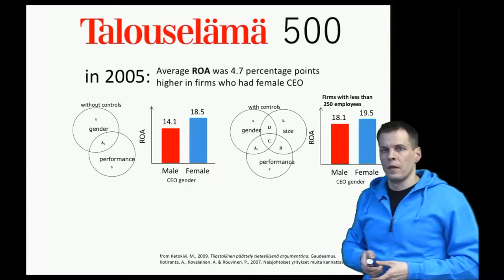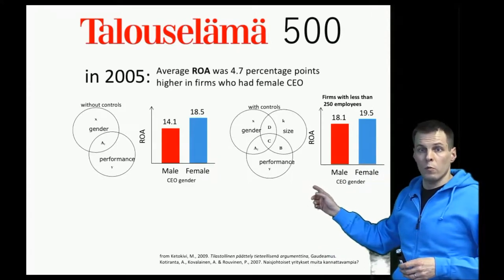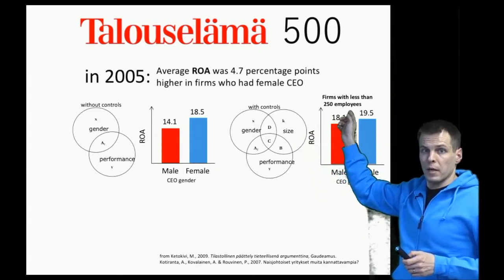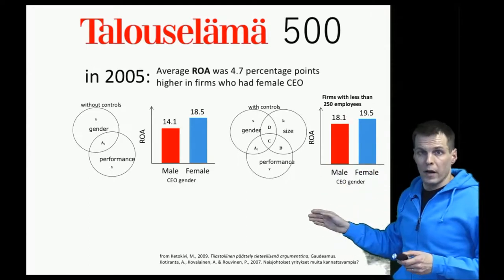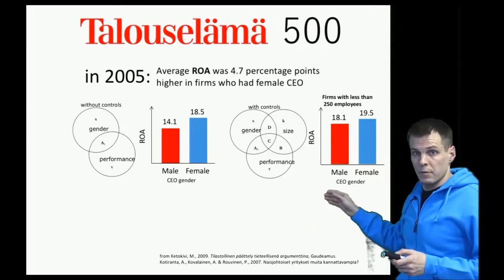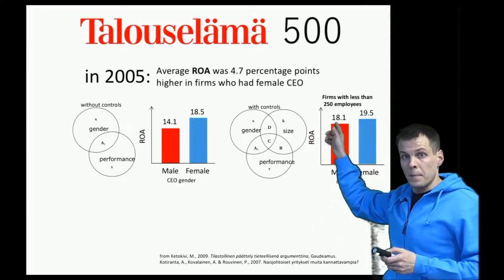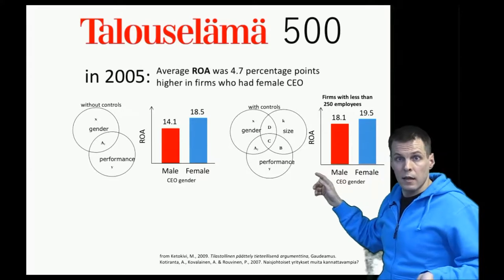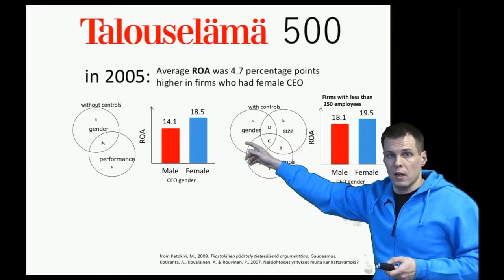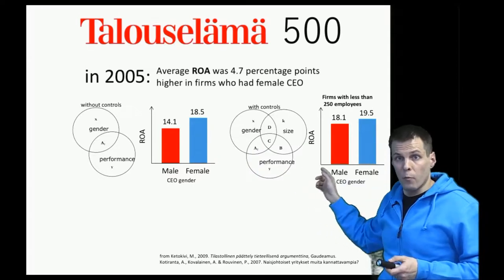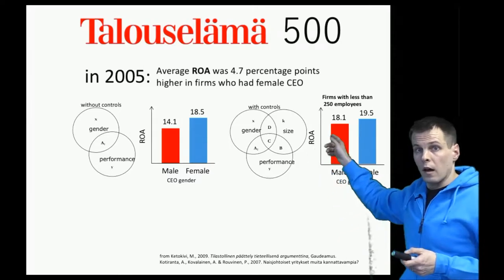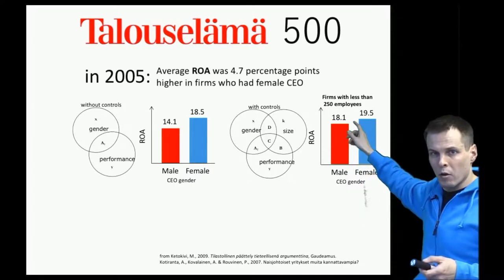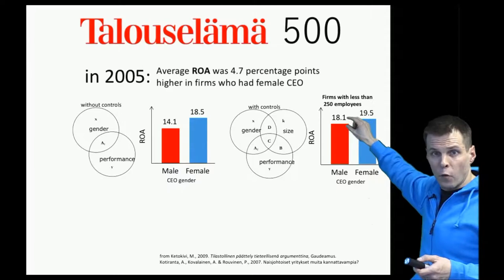Let's assume that there are only a few women-led companies with more than 250 people and most women-led companies have 250 people or less. We could make the samples more comparable by dropping large companies, so we only focus on medium-sized companies with 250 people or less. If size actually is a factor that influences both the CEO selection and performance, then this more comparable sample should give us a smaller performance difference — which it does: the difference is 1.4 instead of 4.7.